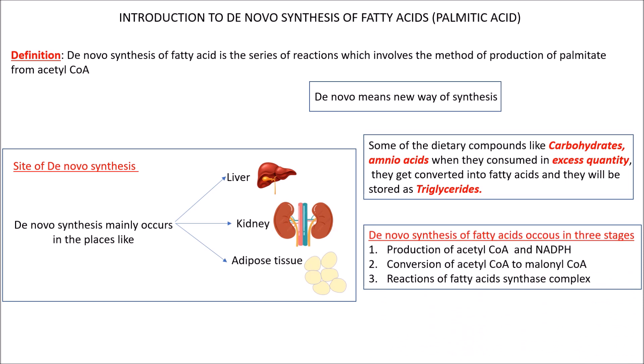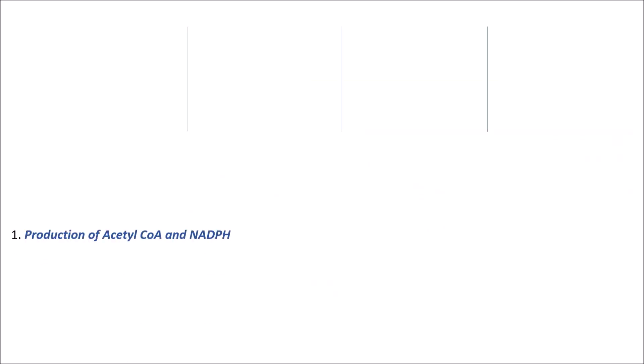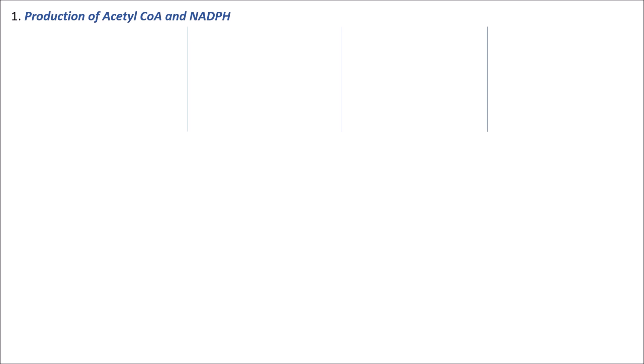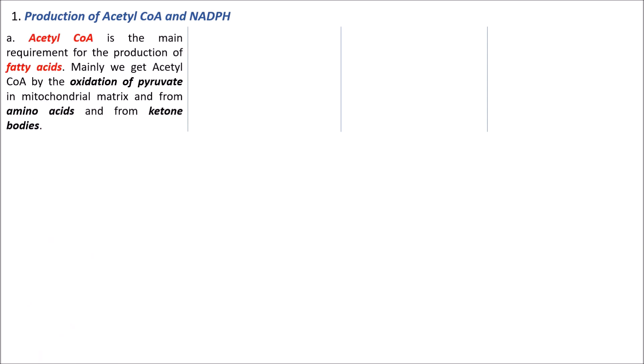De novo synthesis occurs in three stages. The first stage is production of acetyl coenzyme A and NADPH. The second stage is conversion of acetyl coenzyme A to malonyl coenzyme A. The third stage is the reaction of the fatty acid synthase complex. In the first stage, acetyl coenzyme A is the main requirement for the production of fatty acids.